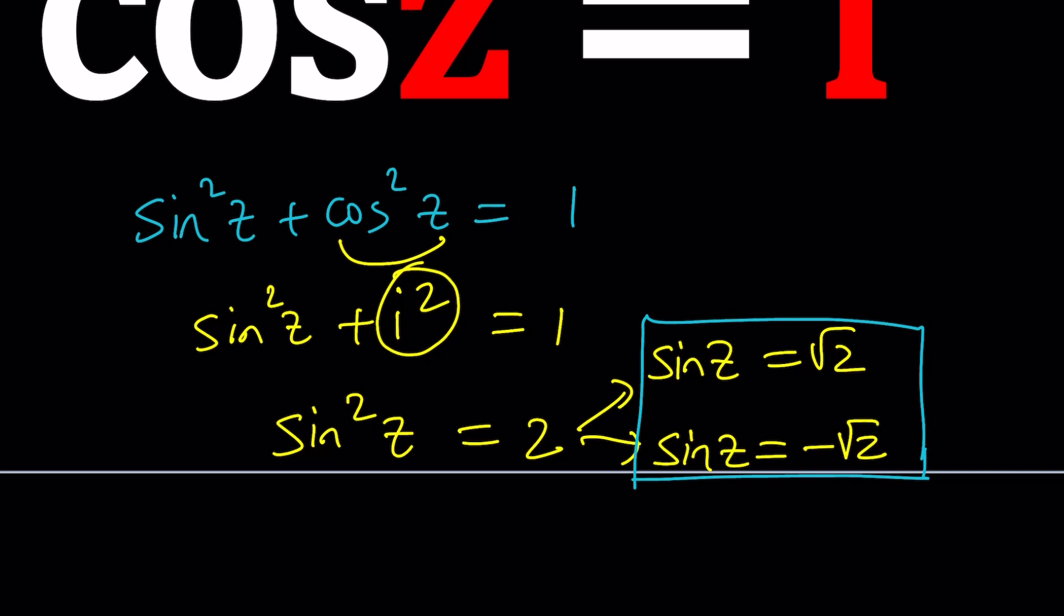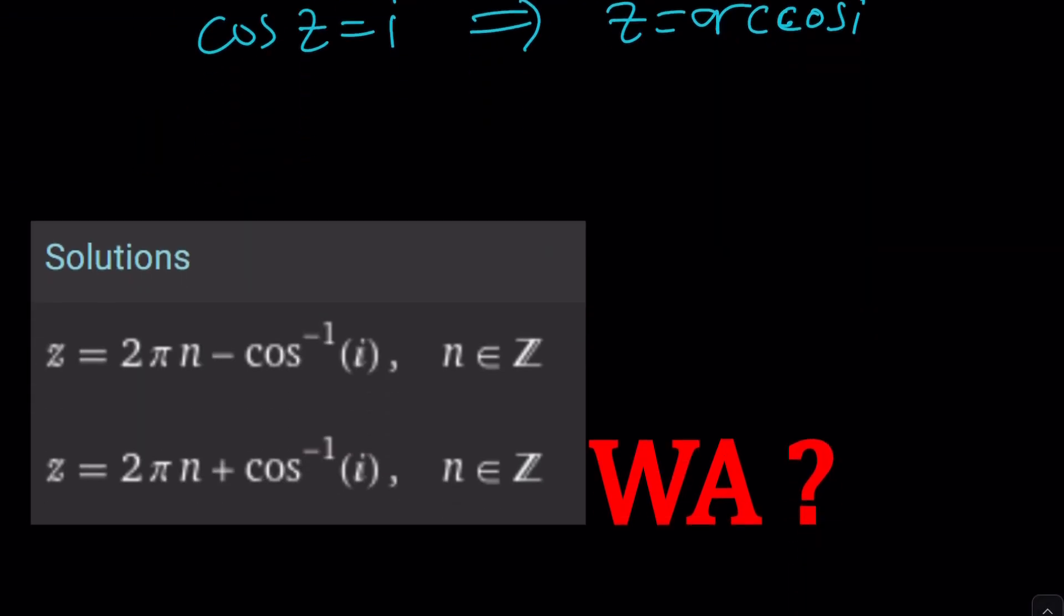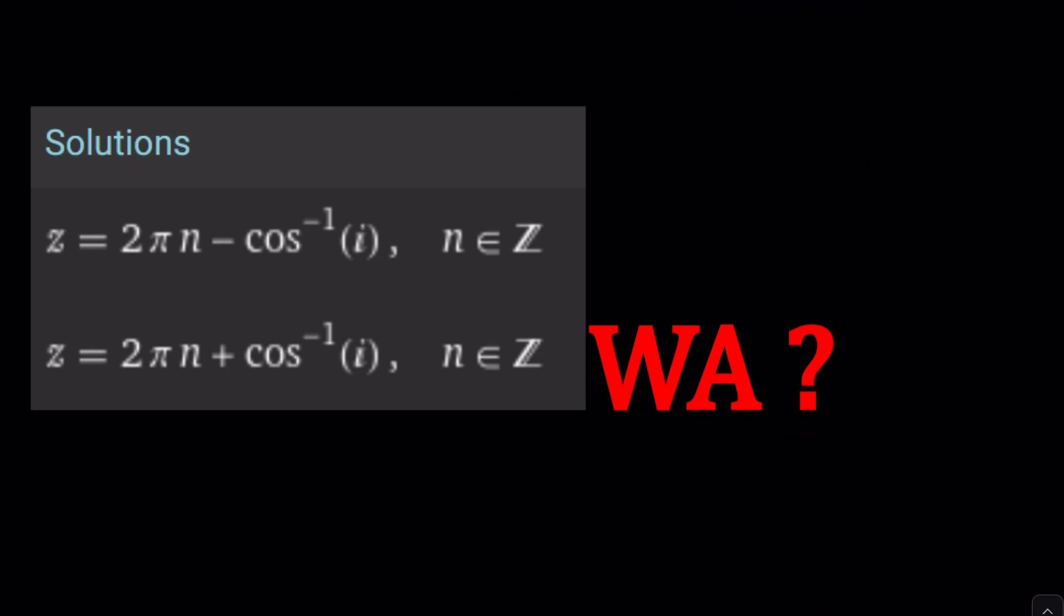All right, so what are we supposed to do then? We could go for the easy route and say, okay, if cosine Z is equal to I, then doesn't that mean Z is equal to arccos of I or something like that? Okay, that would be a really cheap solution, don't you think? That's what Wolfram Alpha provides, by the way. Very cheap solution. Okay, anyways, that's what it is. But let's go ahead and actually find out what the solutions are.